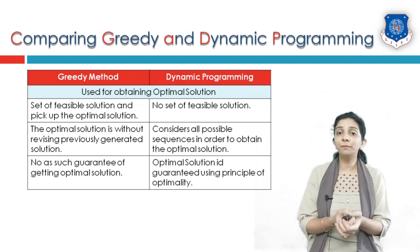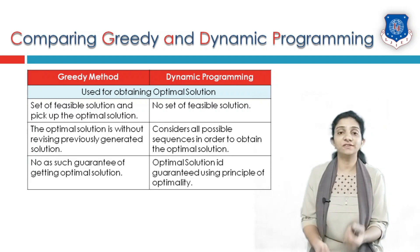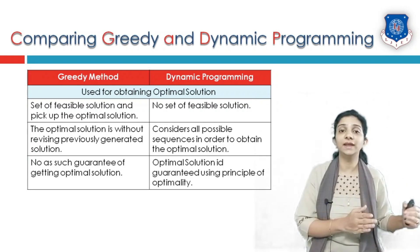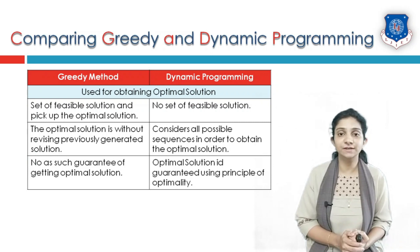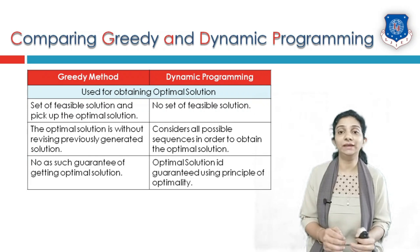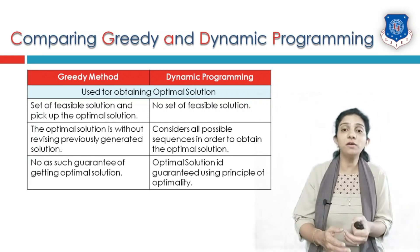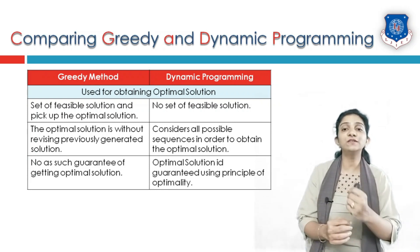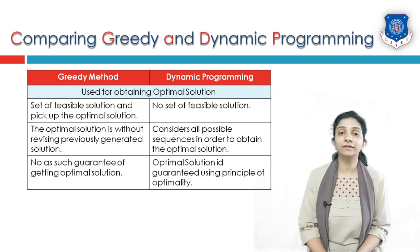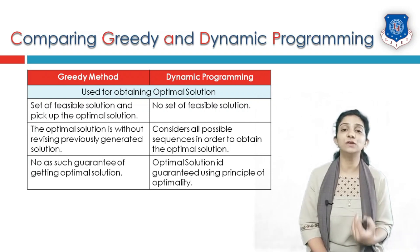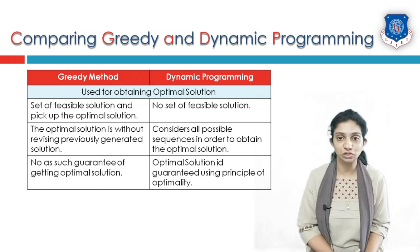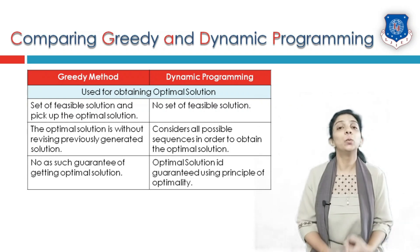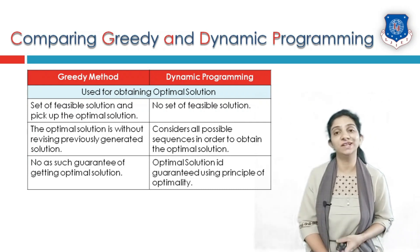Another difference is that in greedy method, the optimal solution is generated without revising previously generated decisions — those steps cannot be changed later. In dynamic programming, it considers all possible sequences in order to obtain the optimal solution, and at any stage different choices can be made. In greedy method, there is no guarantee that the optimal solution will be generated. In dynamic programming, based on the principle of optimality, it is guaranteed that the final solution is optimal.